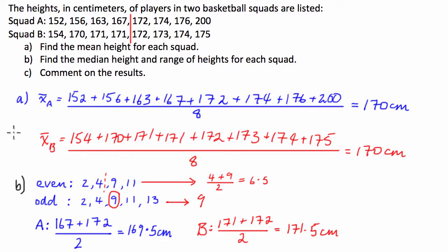We also have to work out the range for part B. The range for any data set, guys, is equal to just the maximum number subtract the minimum number. So the range for these scores, we have the range of A is equal to 200, take 152, and that's going to be equal to 48, and the range of B is 175, take 154, which is equal to 21.